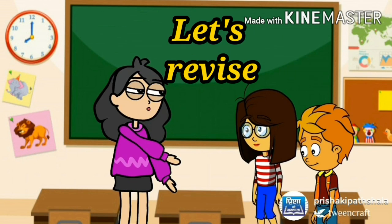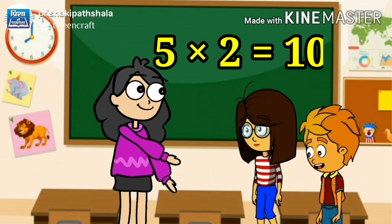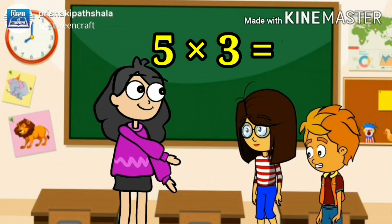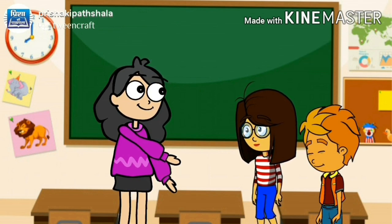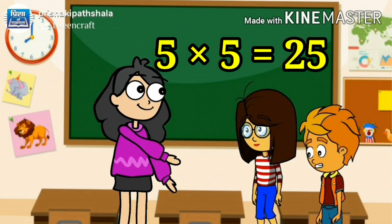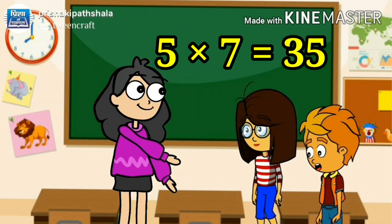Kids, let's revise. 5 1's are 5, 5 2's are 10, 5 3's are 15, 5 4's are 20, 5 5's are 25, 5 6's are 30, 5 7's are 35.